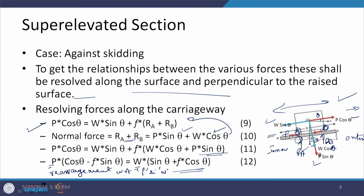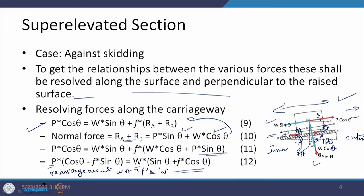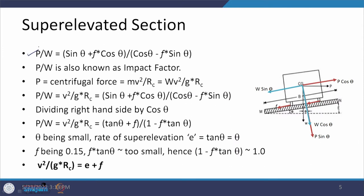Rearranging further, P/W = (sinθ + F·cosθ) / (cosθ − F·sinθ). This ratio P/W is known as the impact factor. Since P = MV²/RC, we can write P/W = V²/(G·RC). Substituting this in gives: V²/(G·RC) = (sinθ + F·cosθ) / (cosθ − F·sinθ).